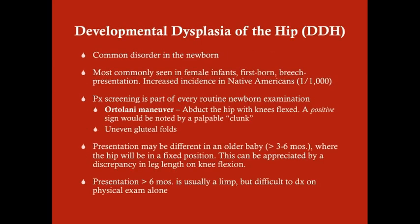Developmental dysplasia of the hip is most commonly seen in female infants, particularly firstborn females born in the breech presentation. The obstetrician must manipulate the legs in breech deliveries, putting the baby at risk for hip misalignment. There is an increased incidence in Native Americans of about one in a thousand.